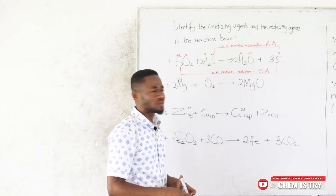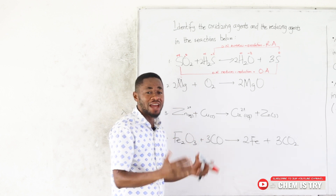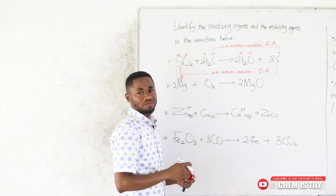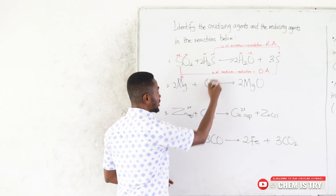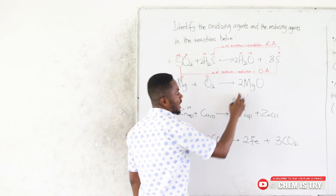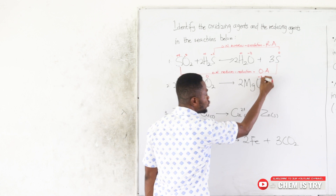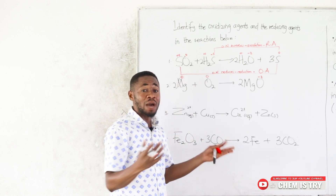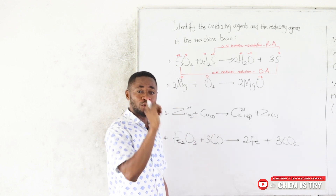For the second example with magnesium: Mg is an element standing alone, so its oxidation number is 0. O₂ is also an element alone, so its oxidation number is 0. In the product MgO — which is not a peroxide — oxygen has a charge of −2. Magnesium is a Group 2A element, so its oxidation number in any compound is +2.